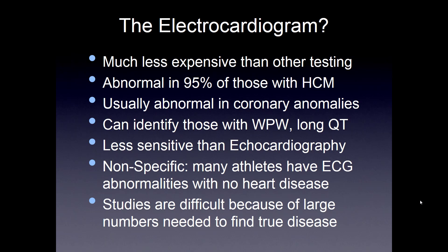The question is whether we should be doing an electrocardiogram in addition to the history and physical. The rationale is it's much less expensive than other tests, it's abnormal in about 95% of those with hypertrophic cardiomyopathy, and it's usually abnormal in coronary anomalies. It can identify conduction abnormalities. But it's less sensitive than an echocardiogram and it's nonspecific — many athletes have an ECG with abnormalities and have no heart disease. The studies are difficult because of the large numbers needed to find true disease.